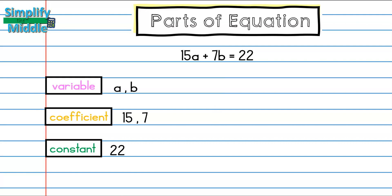Finally, I'm going to count the number of terms that I have. Remember, a term can be a coefficient with a variable, a variable by itself, or a number by itself, called a constant. So here I have 15a, 7b, and 22. So I have three terms.